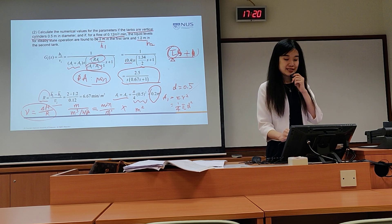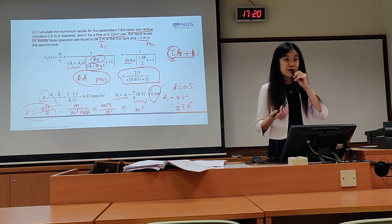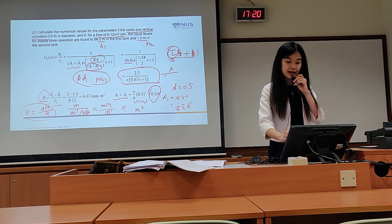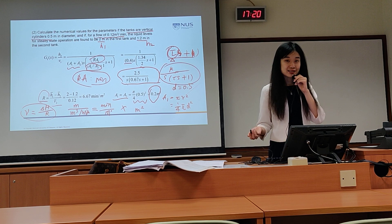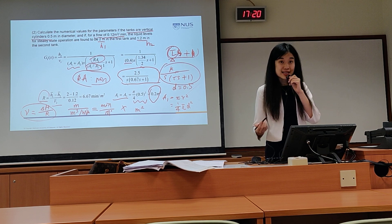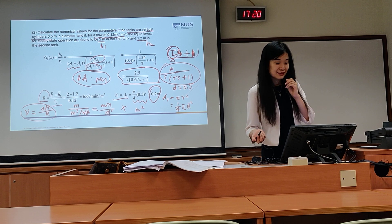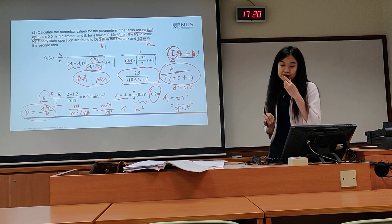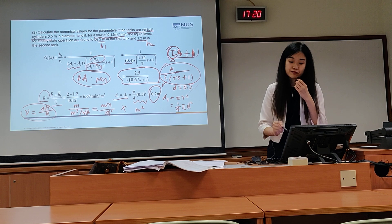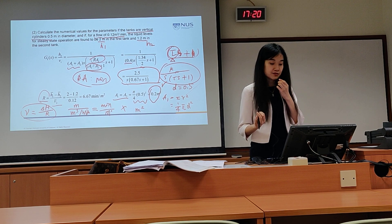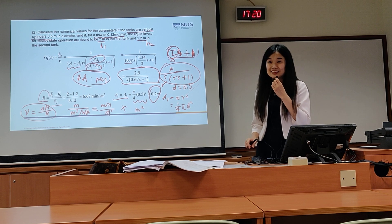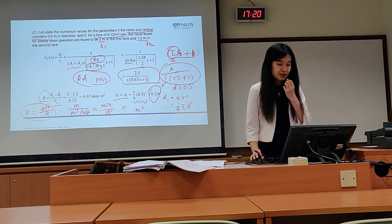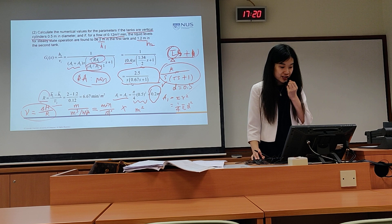This meets our familiar format of K over (tau s + 1), which is the general standard format for a first-order or second-order system. This is our goal when deriving transfer functions — we want to reach this kind of format to show what the time constant is and what the poles of the system are.